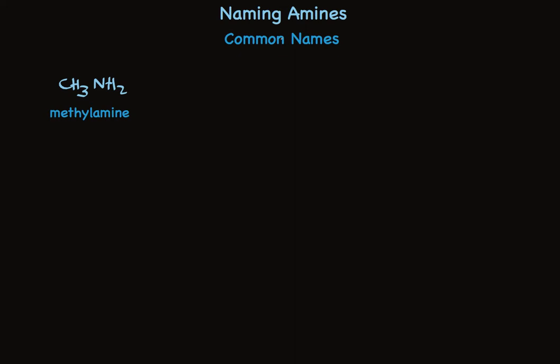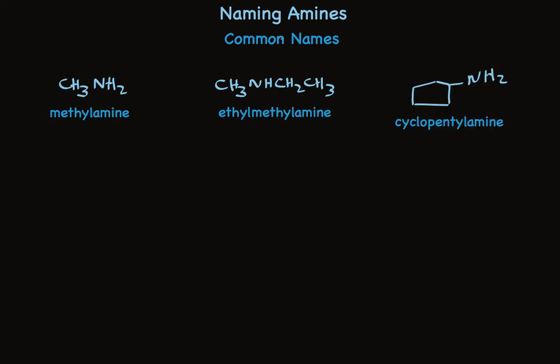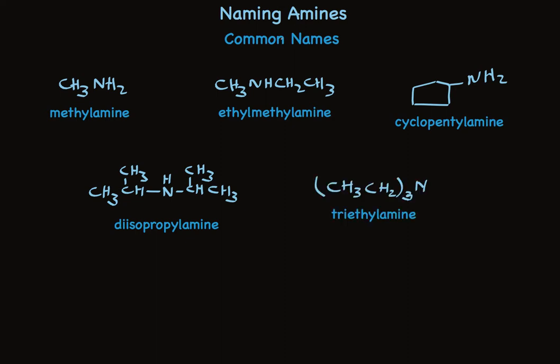If there are two alkyl groups attached, you say both alkyl groups in alphabetical order, all one word — ethylmethylamine. The alkyl groups don't have to be simple straight chain groups; rings are fine too. This is cyclopentylamine. If there are two of the same alkyl groups attached to the nitrogen, you simply put di- in front of it, like diisopropylamine. This is triethylamine — there are three groups attached, all the same.